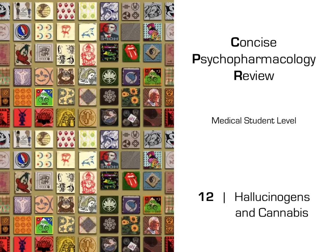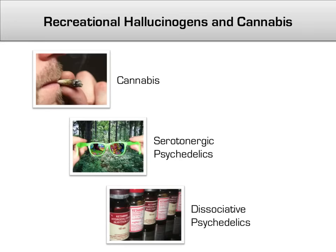Their physiologic effects are not as clear-cut and tend to have to be memorized directly, so some extra attention needs to be applied here. The three main classes of recreational drugs we will cover are cannabis, otherwise known as pot or marijuana; serotonergic psychedelics like LSD and peyote; and dissociative psychedelics like PCP and ketamine.